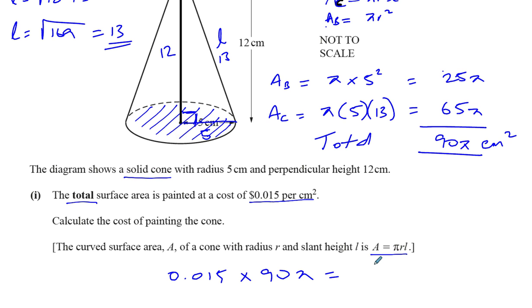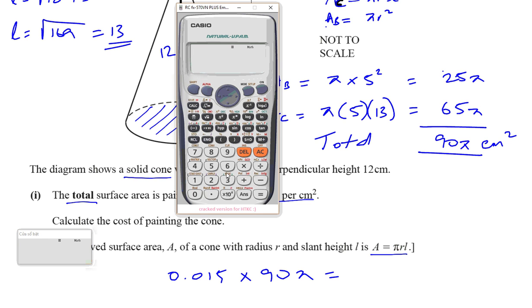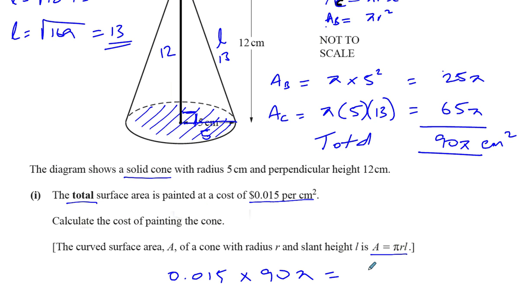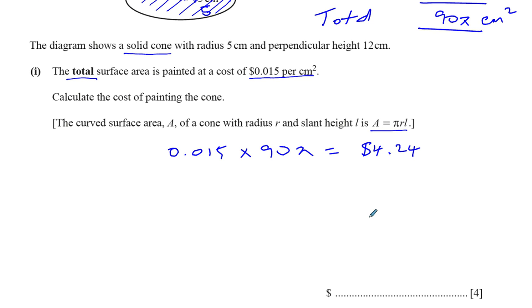The cost for 1 centimeter squared times the area of the whole cone surface area will give us the cost of painting the whole cone. So it's 0.015 multiplied by 90 pi. You can stick that into your calculator. 0.015 multiplied by 90 times pi. That gives us the answer as 27 over 20 pi, which to 3 significant figures will be $4.24. It's currency, so it should be to two decimal places. So $4.24. That is the answer to part 1.